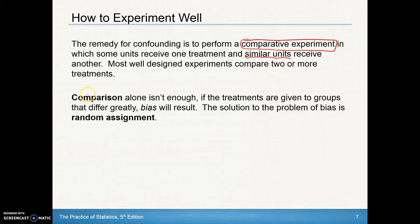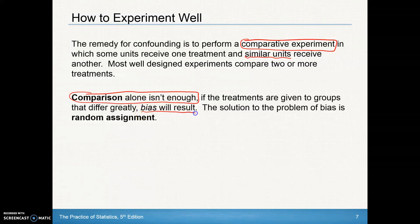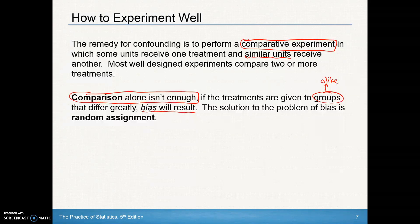But comparison alone isn't enough. If the treatments are given to groups that differ greatly, bias will result. So what we need to do when we make these different groups is to make sure that these groups are alike. The solution to that problem of bias is simply to do random assignment — to randomly assign people to each of the two or more groups.